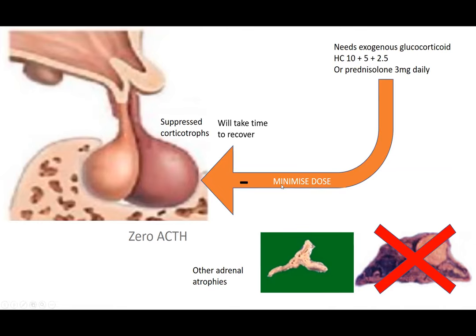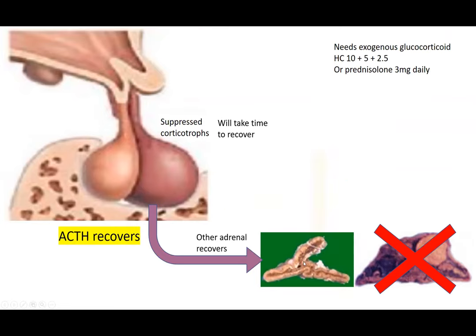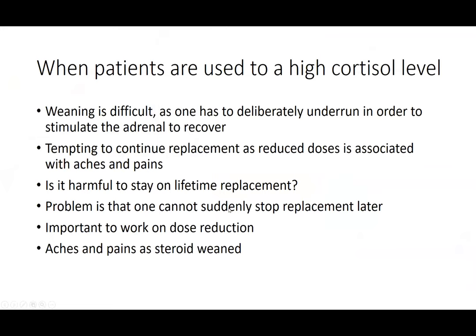If you underrun them slightly, the ACTH will start to rise very slowly and you'll get a bit of recovery. The adrenal gland is still suppressed, so that needs to be a bit high. After a long period, you might get adrenal recovery, and the patient will slowly have a rising cortisol. When it reaches 200, you can probably get them off completely. You might need to underrun before they reach 200 to have any hope of success.